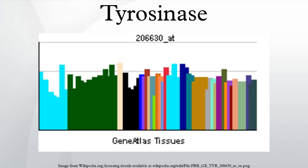Several polyphenols, including flavonoids or stilbenoids, substrate analogs, free radical scavengers, and copper chelators, have been known to inhibit tyrosinase. Henceforth, the medical and cosmetic industries are focusing research on tyrosinase inhibitors to treat skin disorders.